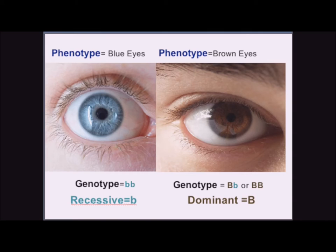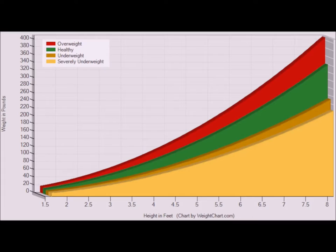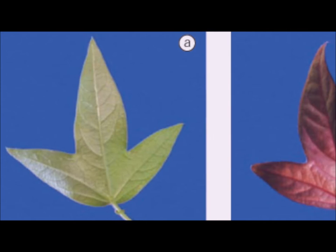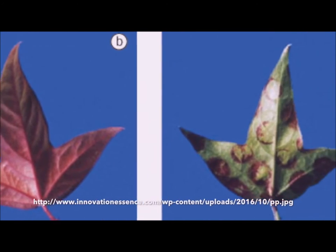The external, observable expression of the genotype is called the phenotype. Phenotypic characteristics that fall into a limited number of discrete categories, such as flower color, are referred to as qualitative traits. Phenotypic traits that have a continuous distribution, such as height or weight, are referred to as quantitative traits. The expression of most phenotypic traits is influenced by the environment.